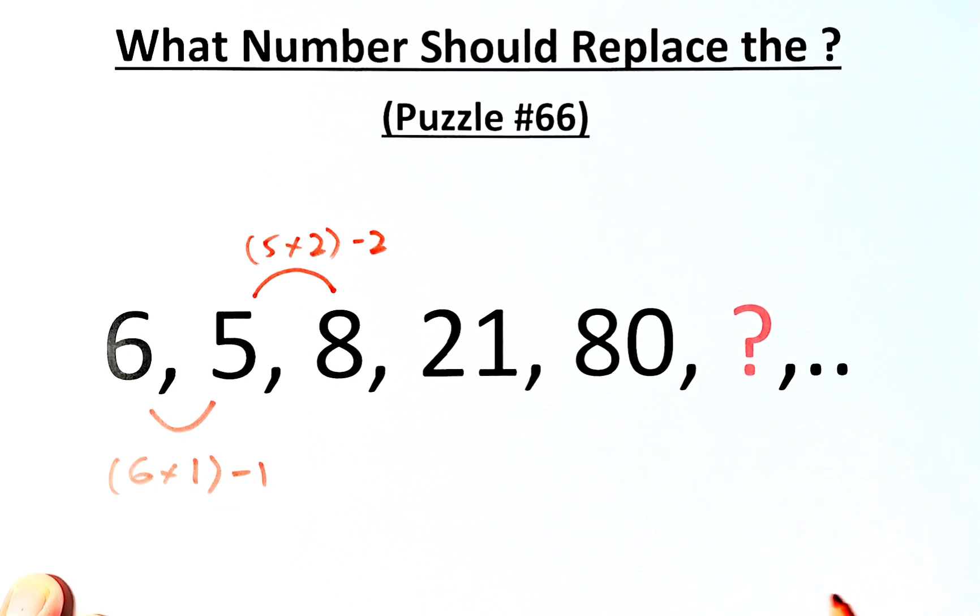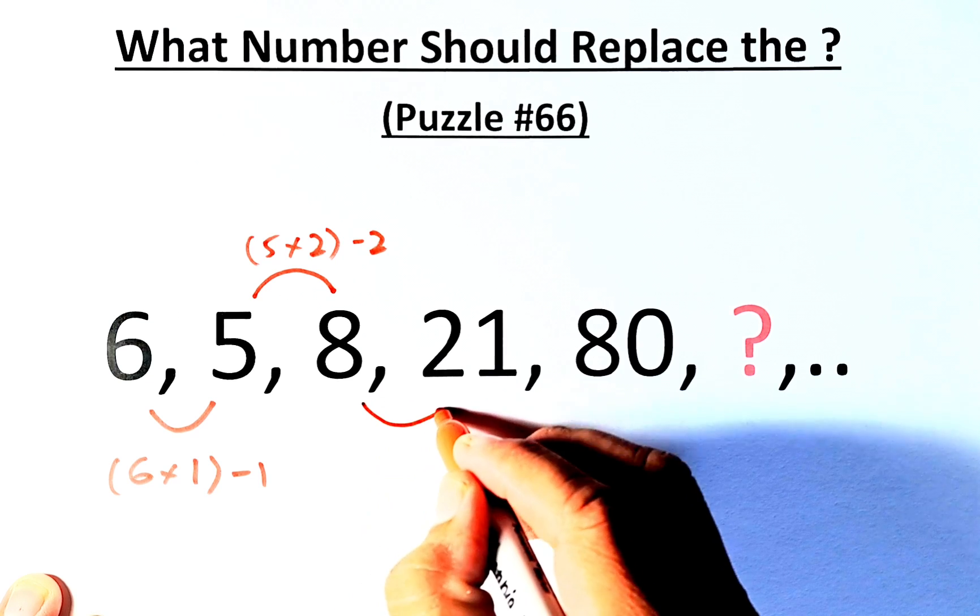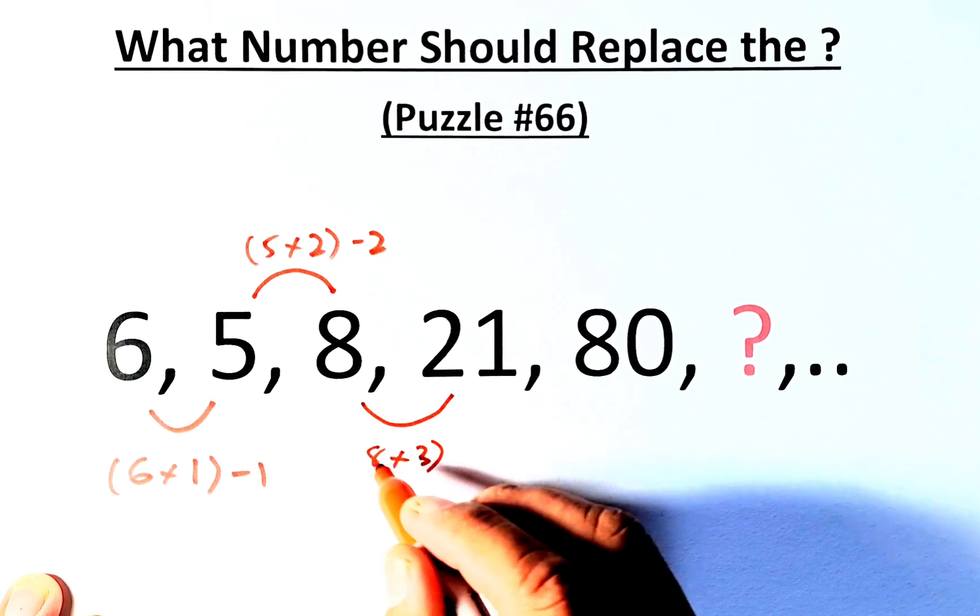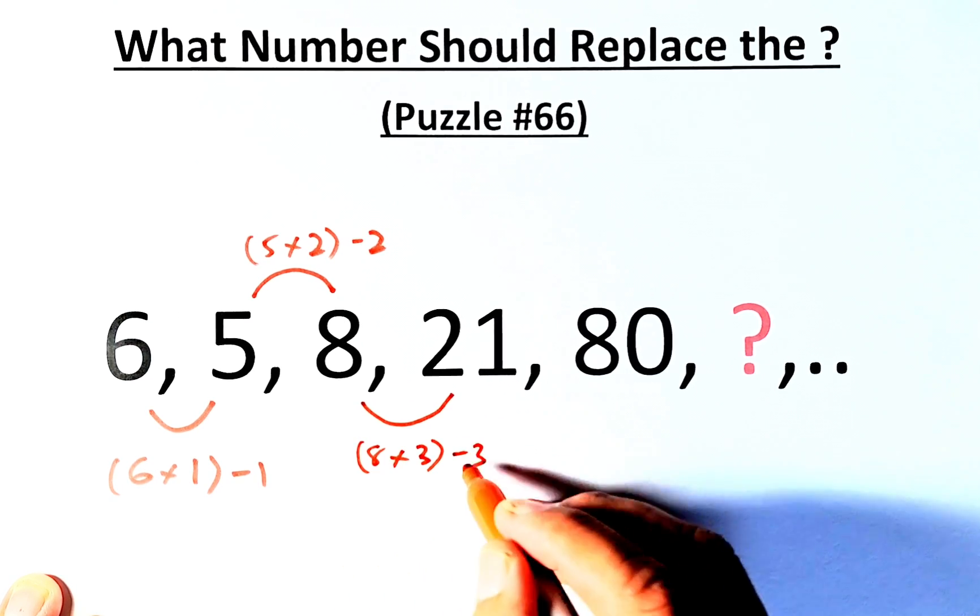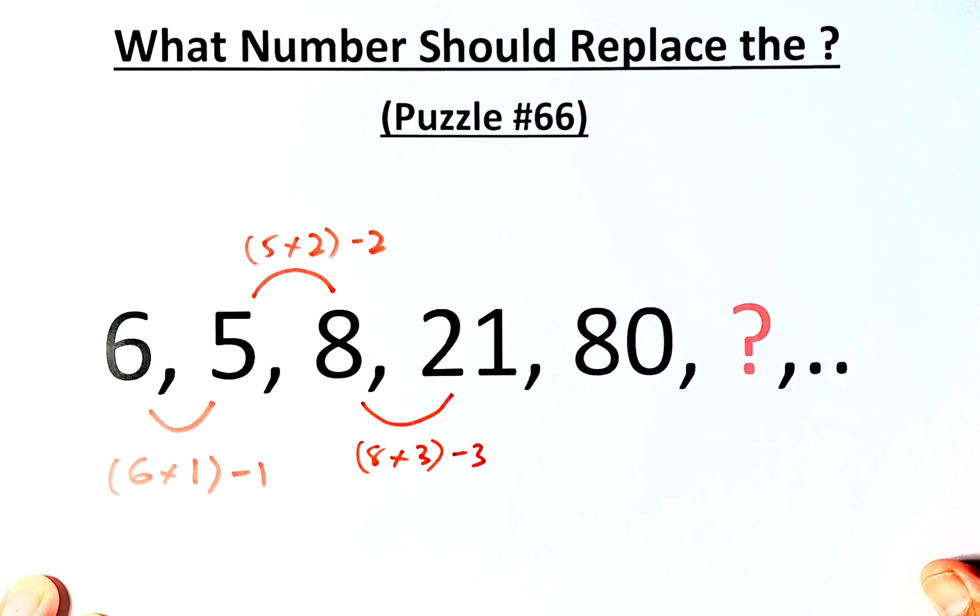Similarly, to get from 8 to 21, what we do is that we take 8, multiply by 3, which is 24, and minus 3, that will give us 21.